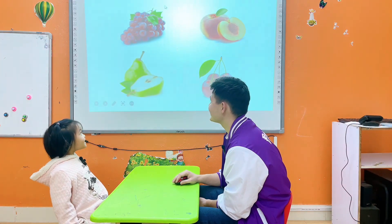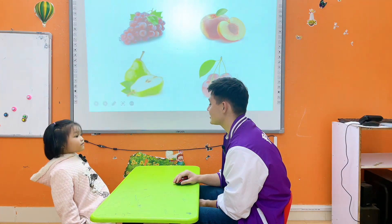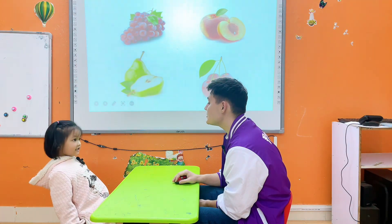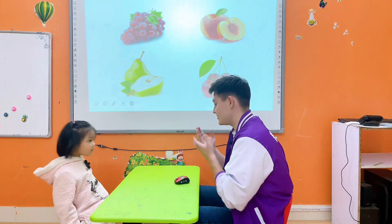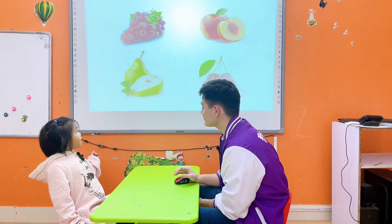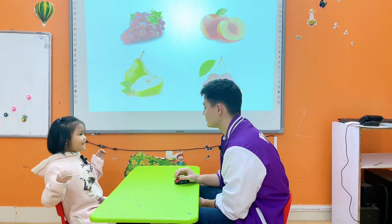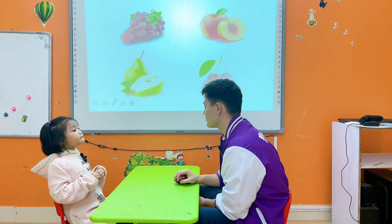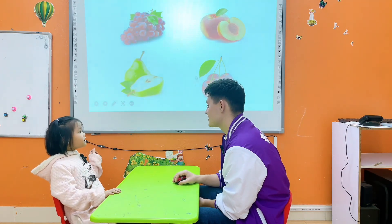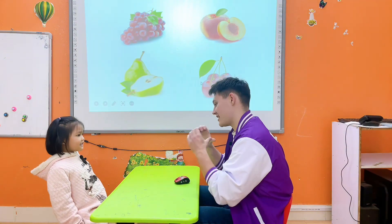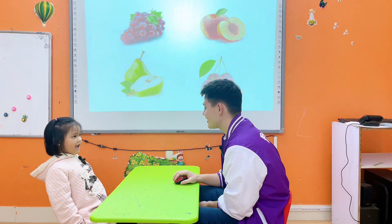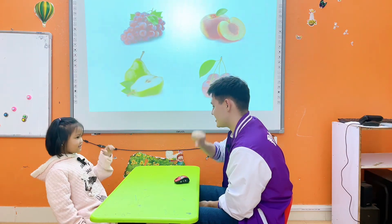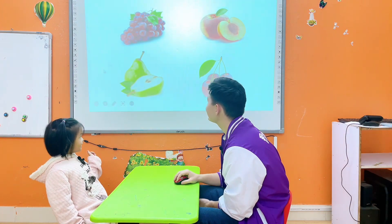Okay. What is it? Grapes. What is it? Peach. Do you like peach? I like peach. What is it? Cherry. Do you like cherry? I don't like cherry.